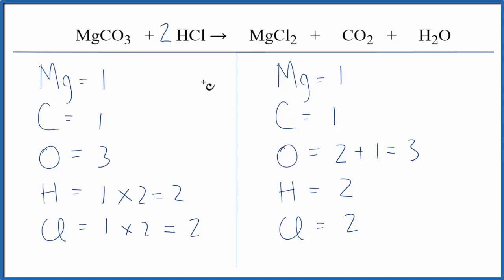We're done. Everything's the same on both sides of the equation. That's the balanced equation for MgCO3 plus HCl, magnesium carbonate and hydrochloric acid.